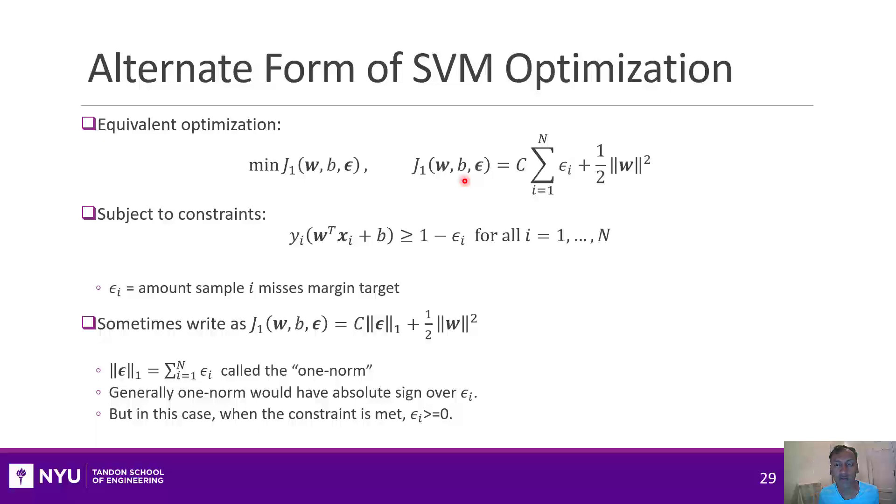Now you can rewrite this expression just by doing some algebraic manipulations. This is the exact same expression as what I wrote in the previous slide. All I've done is I've replaced that hinge loss term by this term epsilon i, or 1 minus epsilon i, as written here. And then when you write it in this form here, you can rewrite this as this. And this epsilon i is none other than just the one norm of these epsilons.